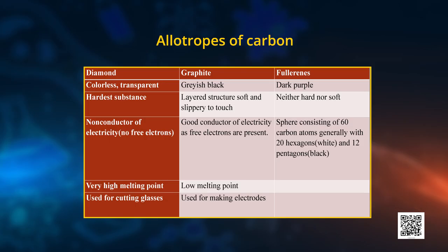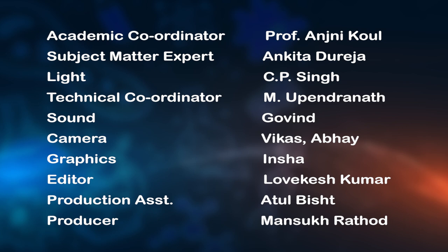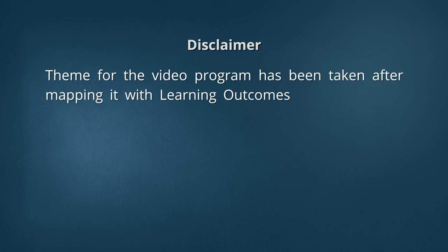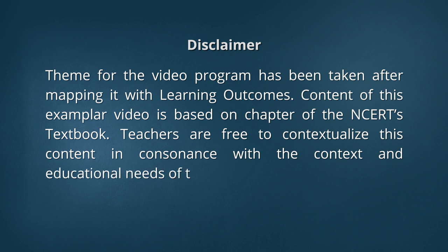Let us talk about fullerenes, which is also an allotrope of carbon. It appears to be like a football, as you can see on the screen. It is made of 20 hexagon and 12 pentagon rings interlinked with each other. Now students, let us recall what we did in this episode. We started with the test of carbon, then we covered the versatile nature of carbon, covalent bonding structures, and allotropes. You will be able to draw electron dot structures and show your creativity by making models using eco-friendly materials.